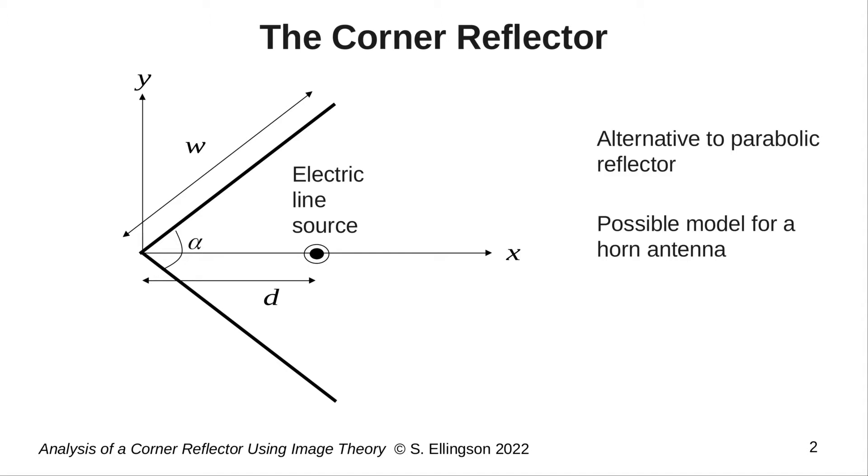You may notice some similarity to a parabolic reflector, and there is a roughly similar method of operation. However, whereas a parabola would collimate radiation from the feed, that is, make all the reflected rays travel in the same direction to the far field, the geometry of the corner reflector clearly cannot do that.